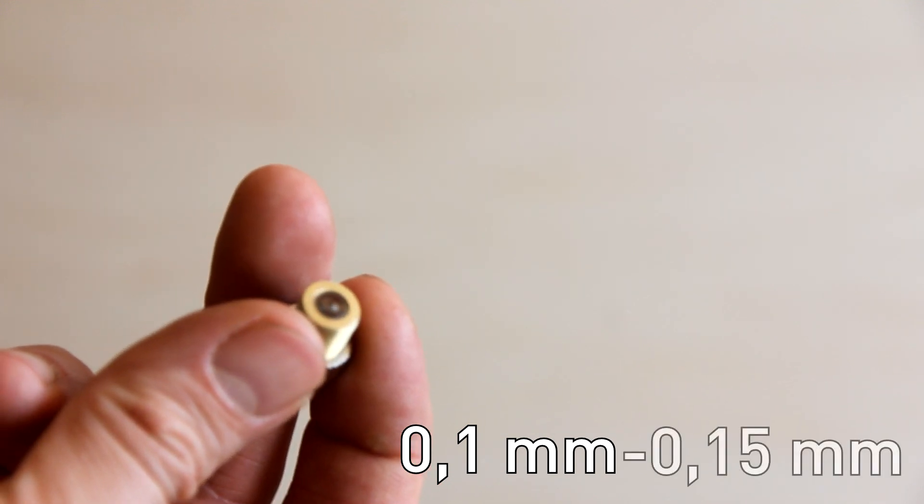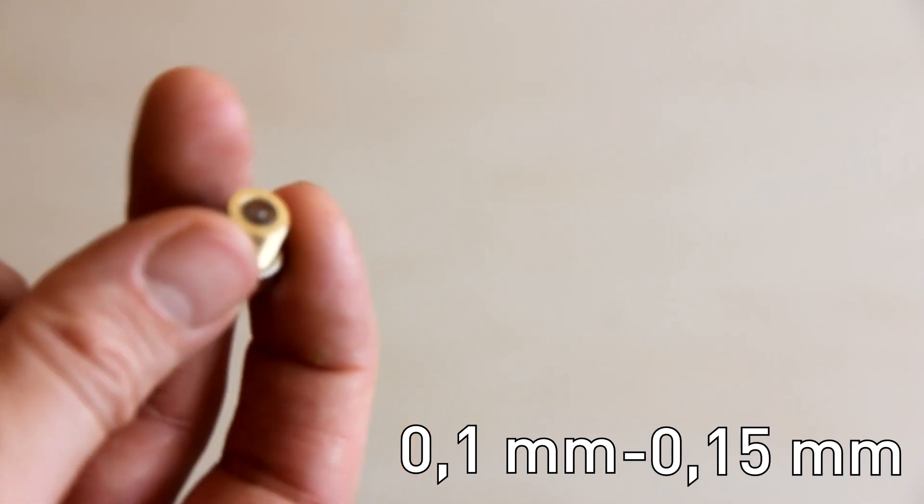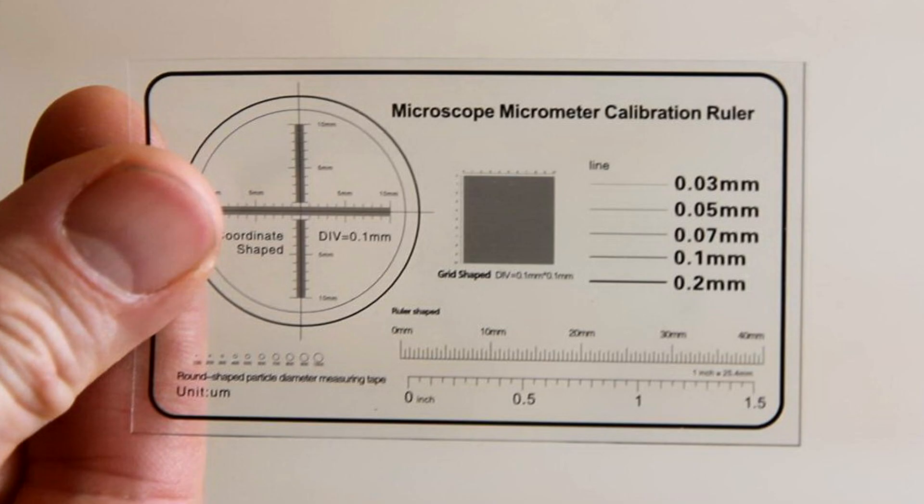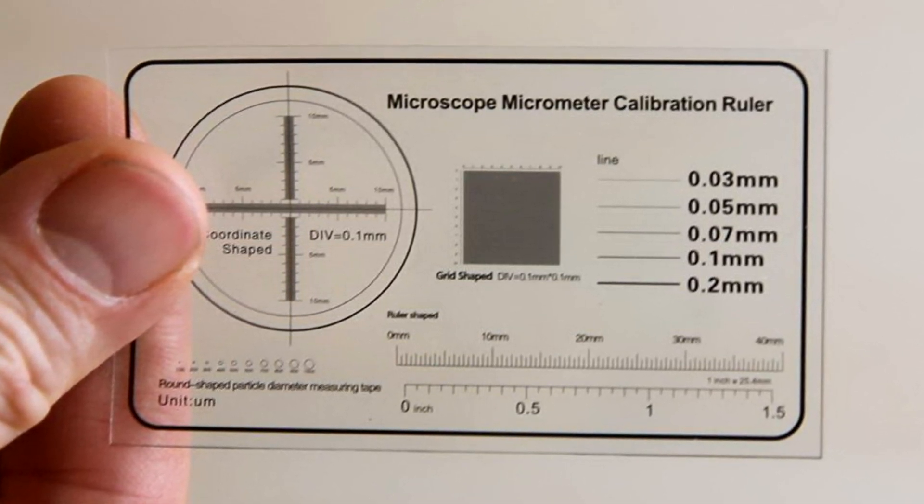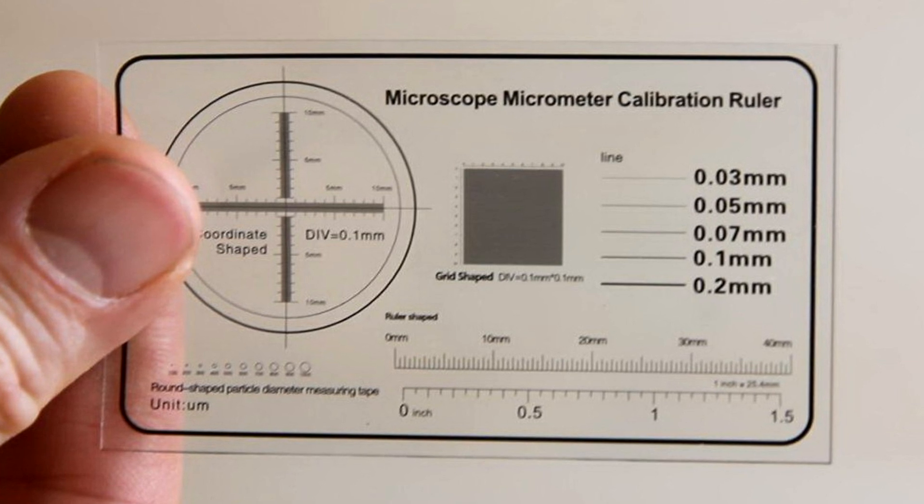You can check the laser spot with a special ruler like this. If your line is closer to 0.1 millimeter you're doing fine.